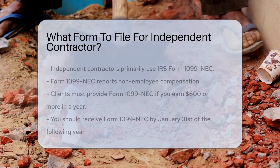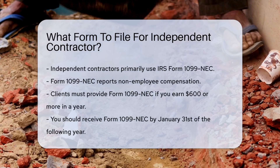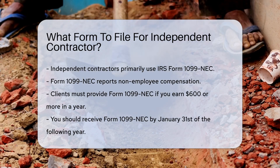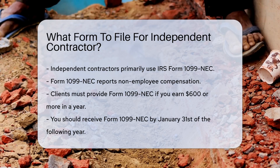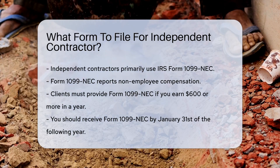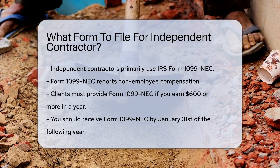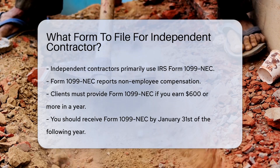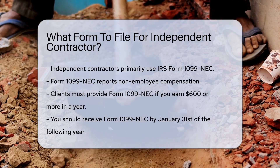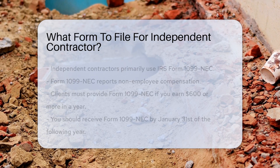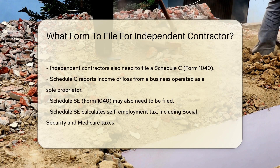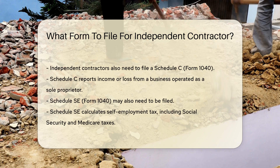When working as an independent contractor, understanding the correct tax forms is crucial. The primary form used by independent contractors is the IRS Form 1099-NEC. This form reports non-employee compensation. If you earn $600 or more in a year from a client, they must provide you with a Form 1099-NEC. You should receive this form by January 31st of the following year.